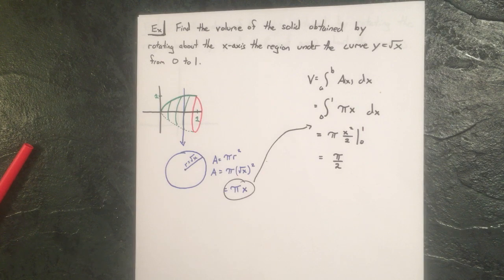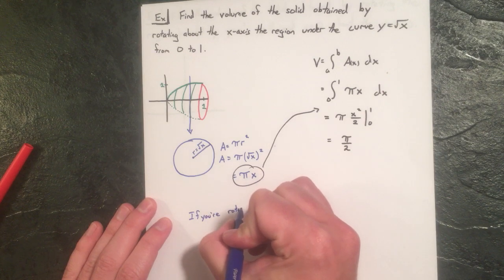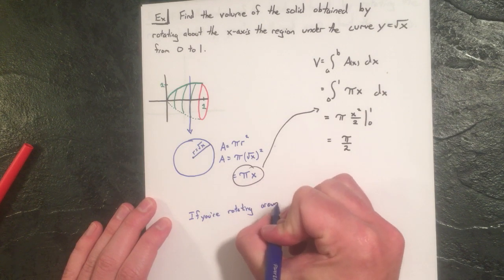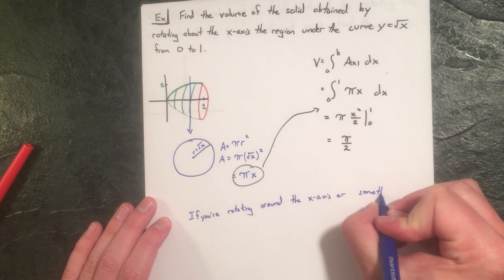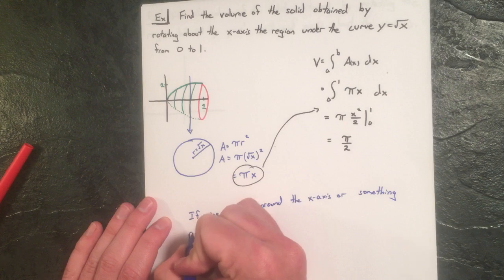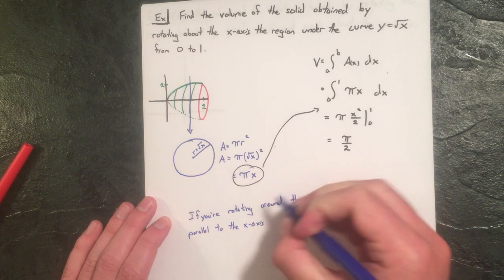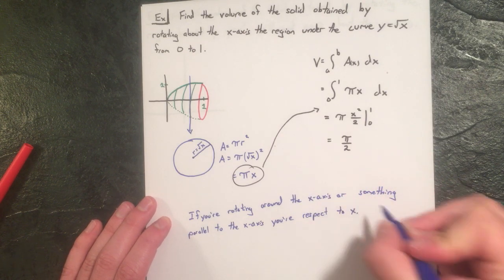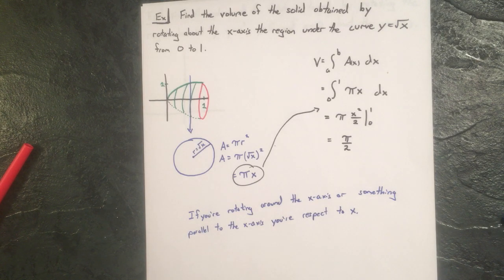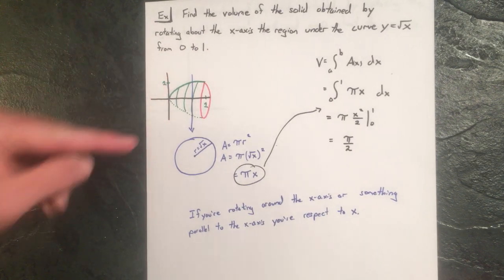One thing I left out: how do we know it was with respect to x? If you're rotating around the x-axis, or any line parallel to it, you're going to be integrating with respect to x.